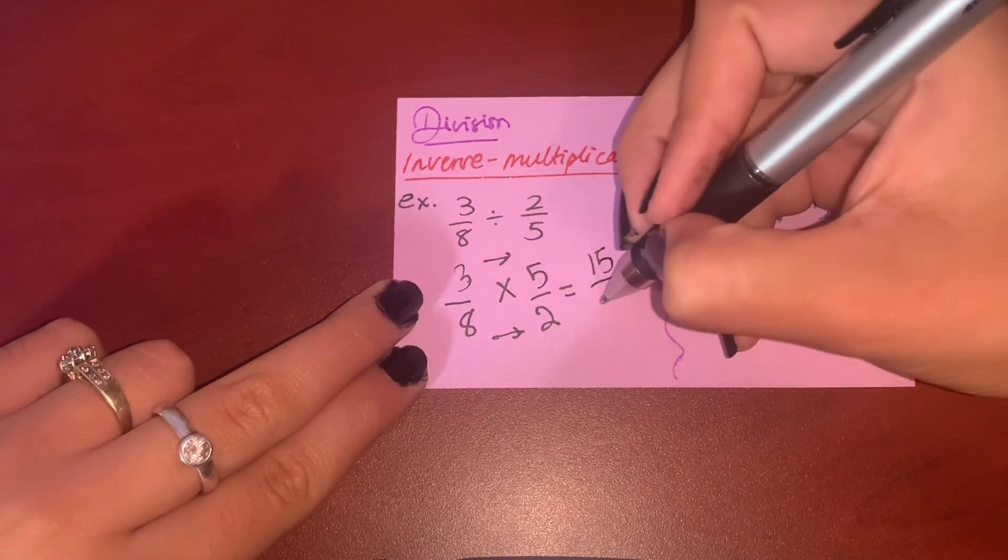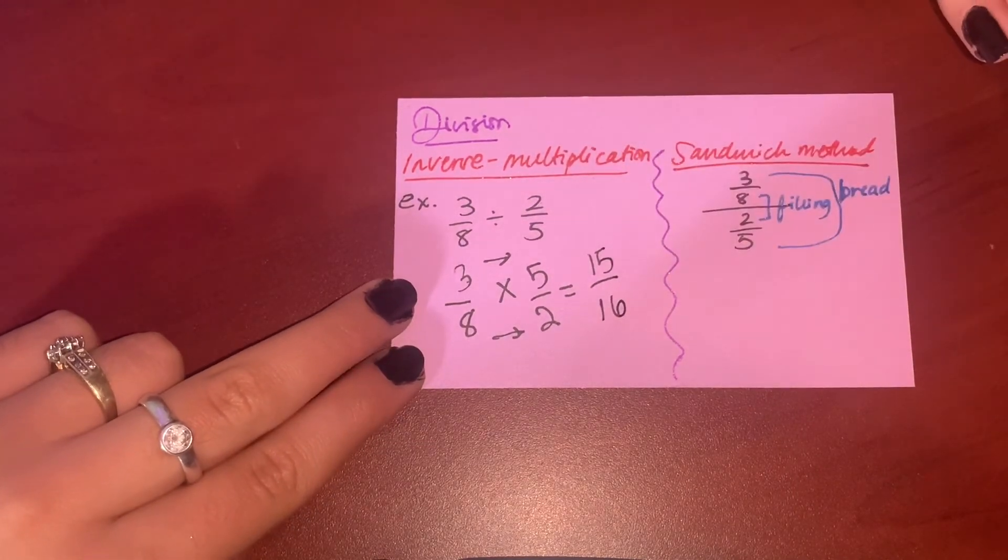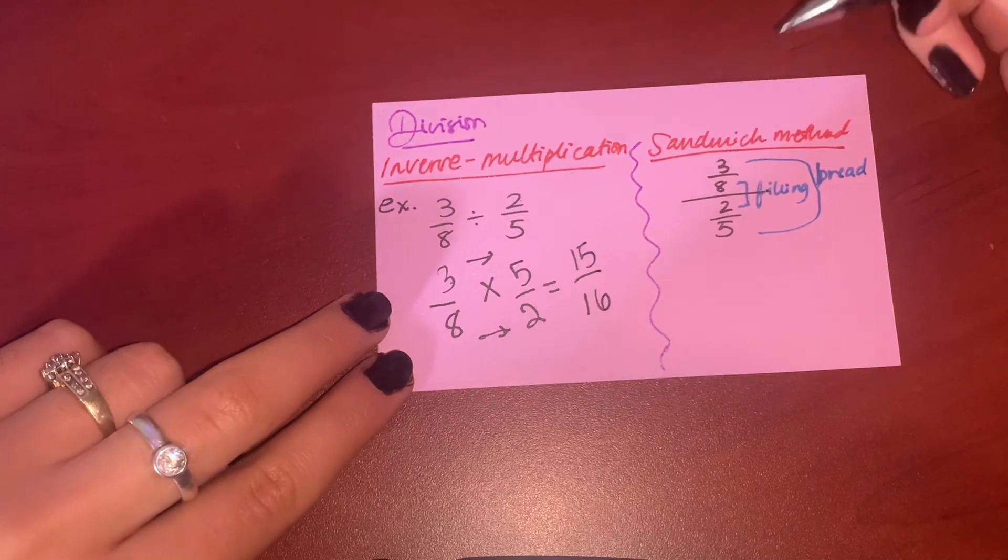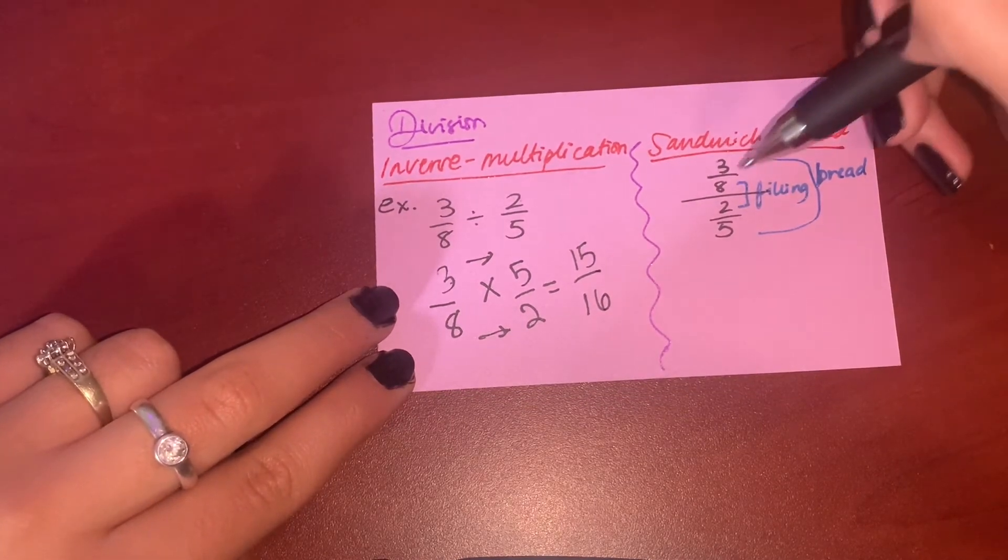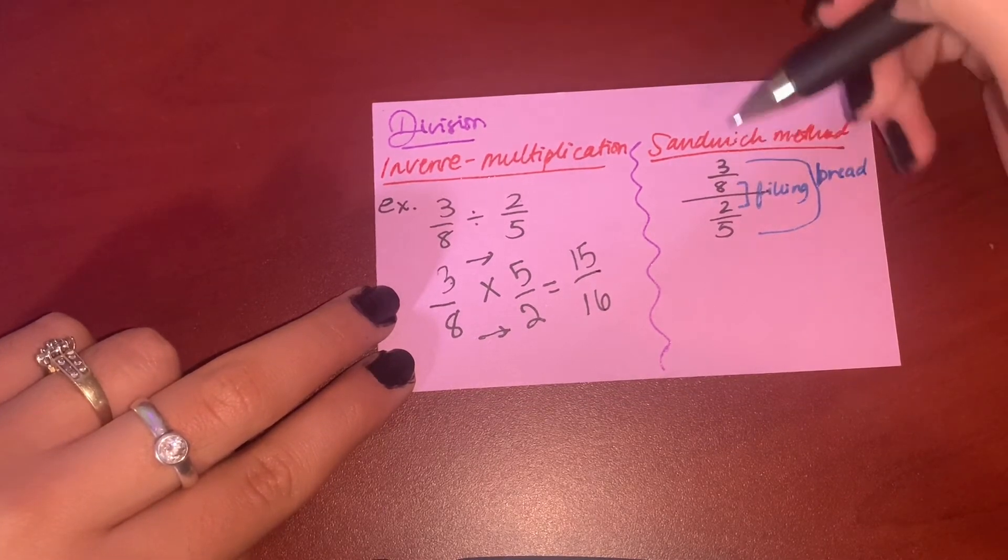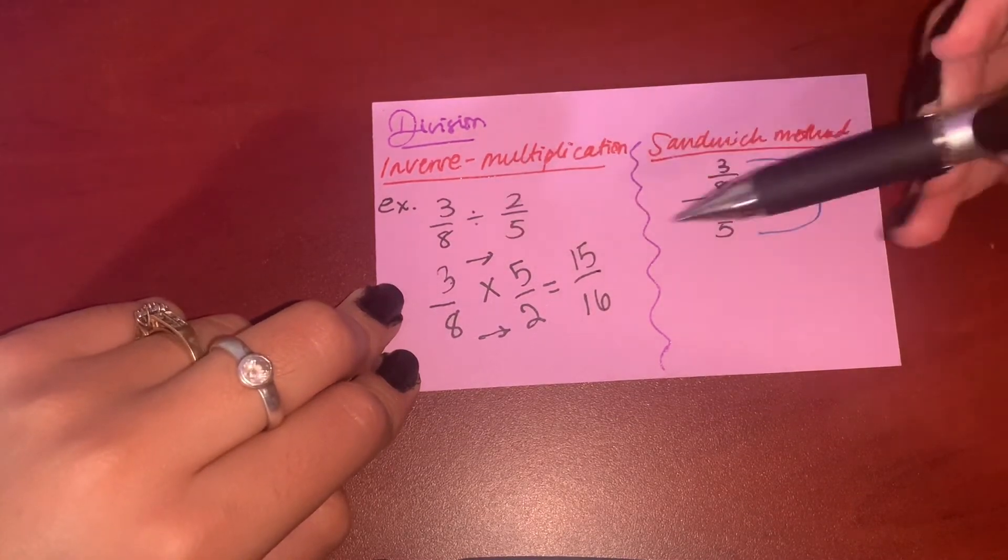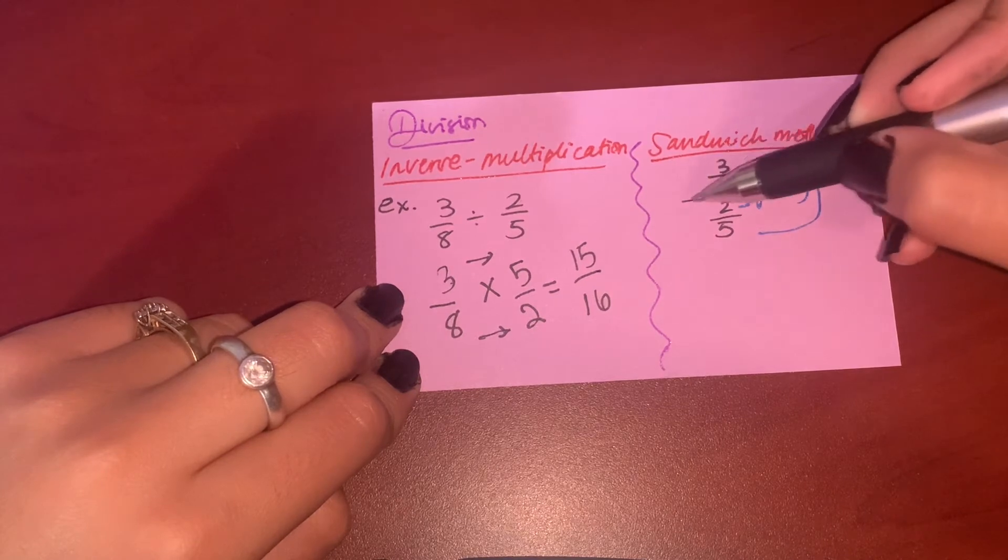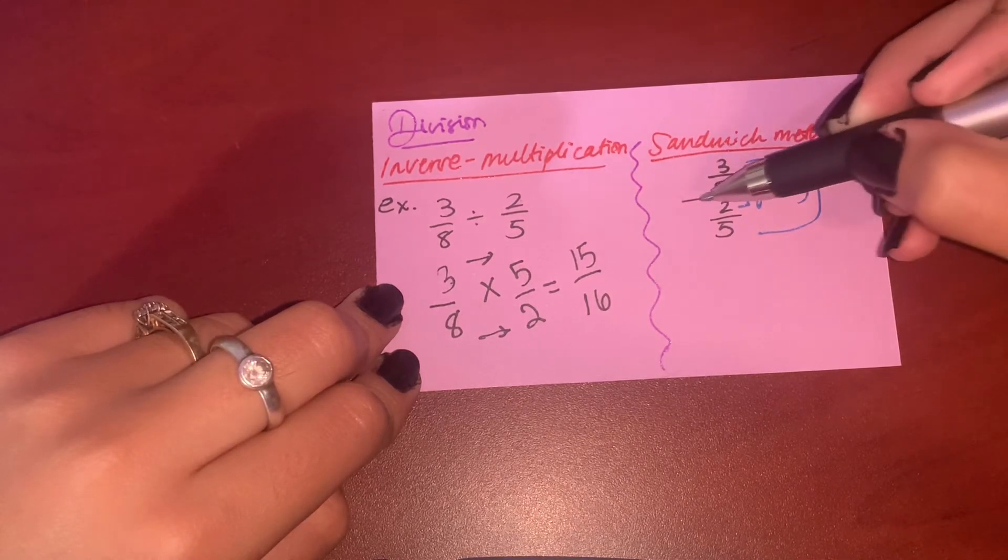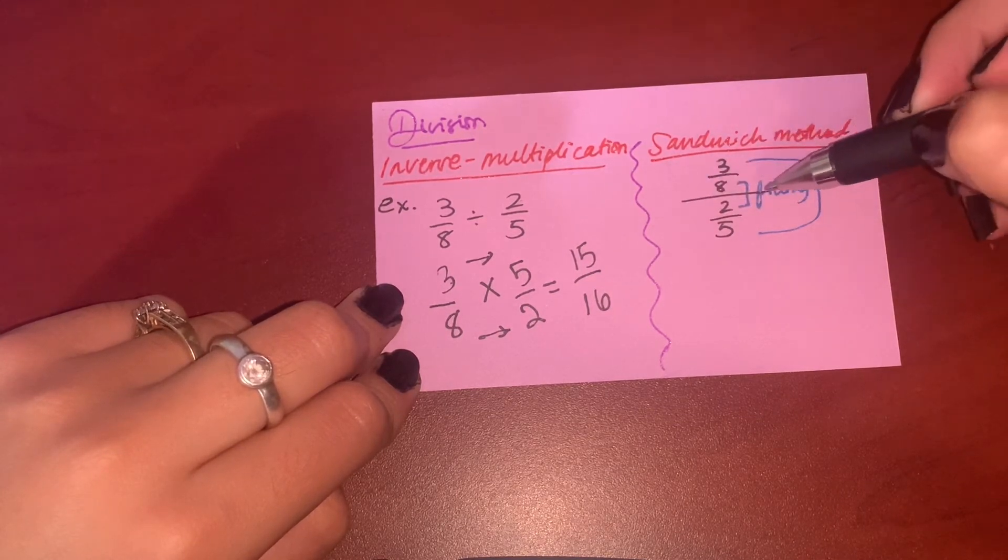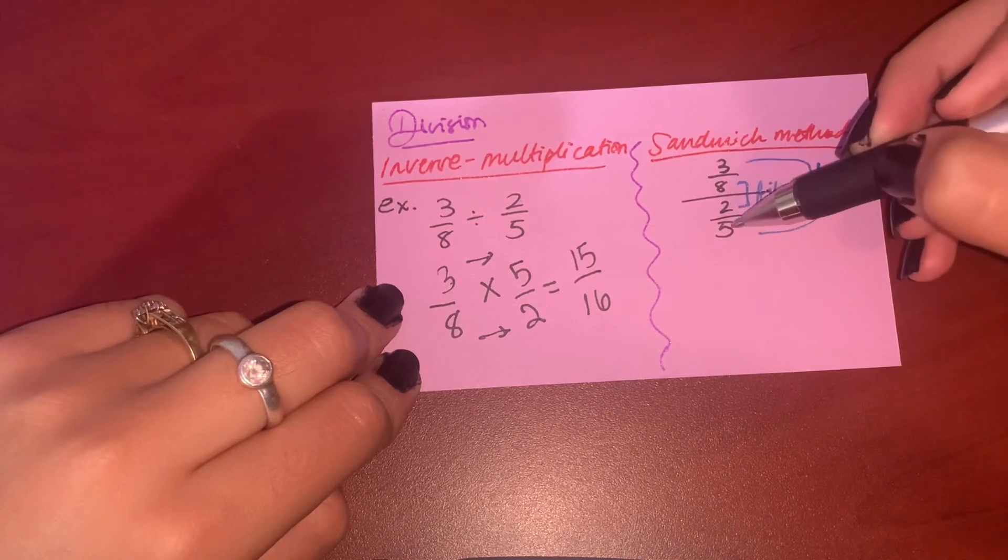Now you already know how to multiply—you just go straightforward. 3 multiplied by 5 is 15, 8 multiplied by 2 is 16. That's it. Now here in the sandwich method, I use the same problem just to see how we would get the same answer. So we write 3 over 8 here, and then we make a big fraction, a big line that means it's getting divided by the other fraction, 2 over 5.